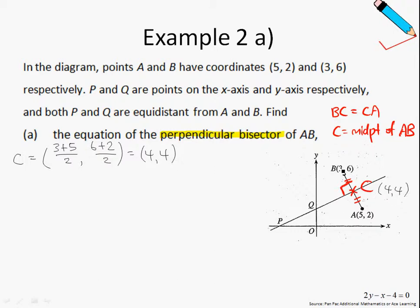Next, we will move on to find the gradient of AB. Let's call the gradient of AB MAB. So gradient of AB is simply the y-coordinate of B minus the y-coordinate of A, so 6 minus 2 over the x-coordinate of B minus the x-coordinate of A. Working this out, we'll have 4 over negative 2, which is just negative 2.